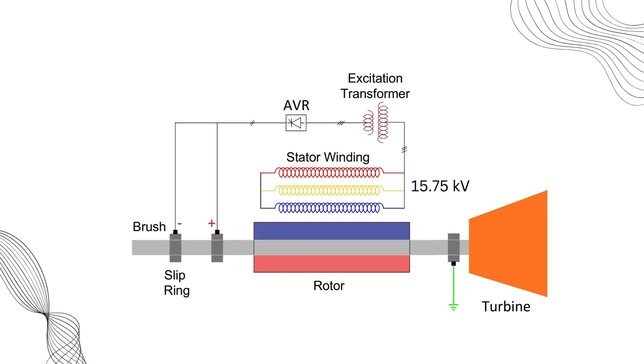The excitation transformer steps down the generator's output voltage to a safer level suitable for the automatic voltage regulator or AVR. For instance, the input voltage to the AVR is a constant 575 V AC, but the output is a variable DC. The AVR, which is the heart of the excitation system,